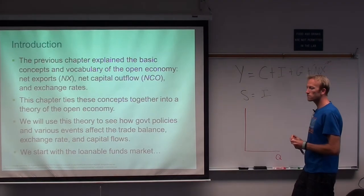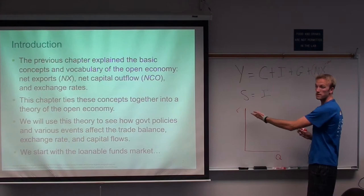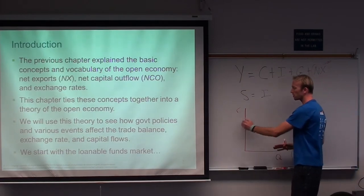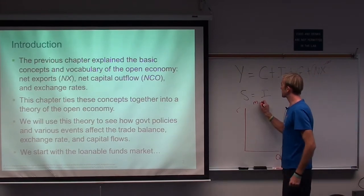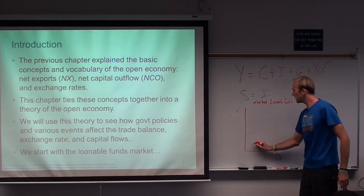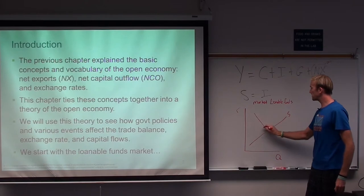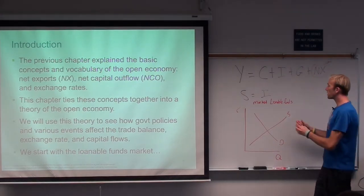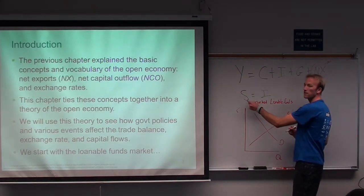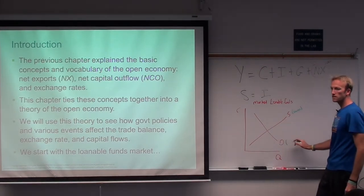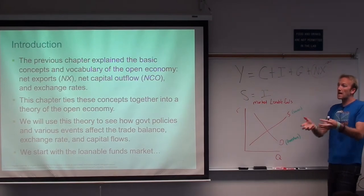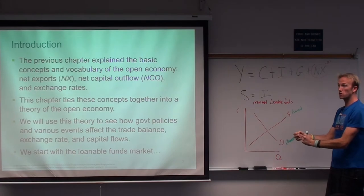In the market for loanable funds, the quantity of loans is on the x-axis and the real interest rate is the price on the y-axis — it's a regular supply and demand curve. The suppliers of loans are savers; the demanders are households and firms doing investing. Remember: in this class, investing means the purchase of physical or human capital, not putting money in stocks or bonds.